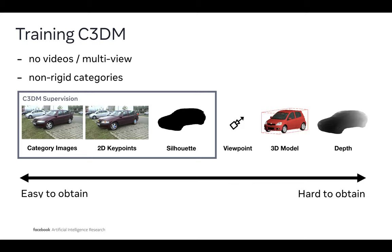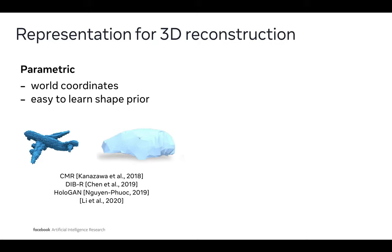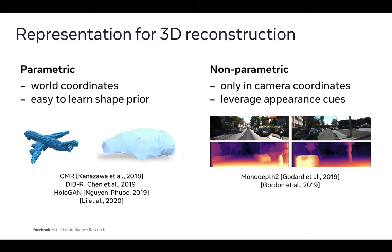Unlike other methods, it doesn't need any 3D information like ground truth models, depth, or camera viewpoint. Unsupervised or weakly supervised learning of 3D shape is usually attempted with what we call parametric approaches. They reconstruct the shape in world coordinates where it is easy to learn a prior distribution of the category shape. Such methods predict an unstructured latent code that is passed to a shape encoder. The other group of methods learns to regress accurate depth for each pixel without 3D supervision — we call such methods nonparametric. They predict 3D in the camera coordinates and are better at leveraging appearance cues like shading.